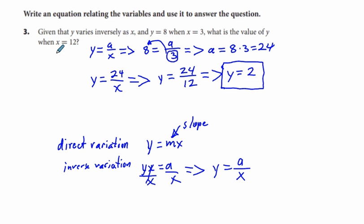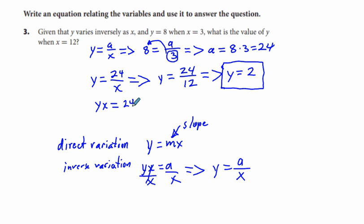Another way to work this out: you can write x times y equals the constant of variation 24, then divide by x to get y.